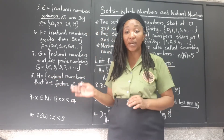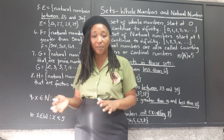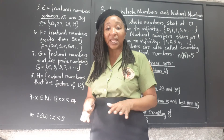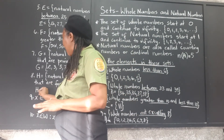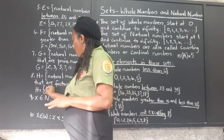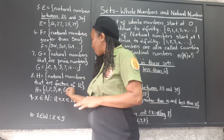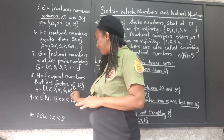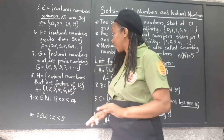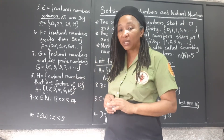Set H: the natural numbers that are factors of 12. A factor is a number that divides exactly into another number without leaving a remainder. Since one is a factor of every number, we start with one. The natural numbers that are factors of 12 are: 1, 2, 3, 4, 6, and 12. There are six elements in this set.